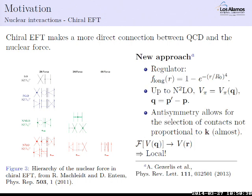A new approach is inspired by the idea that up to N2LO, the pion-exchange potential is really only a function of the momentum transfer Q, and Fourier-transforming that gives a local potential. Regarding the K-dependent contacts, at least up to N2LO there is freedom due to antisymmetry that allows you to select a subset of contacts. The typical choices were made for convenience, but you can choose differently to eliminate almost all contacts proportional to K — one remains that looks like a spin-orbit force, which is already in the Argonne force and can be handled.